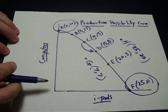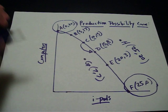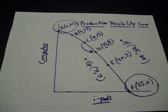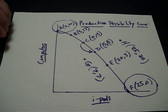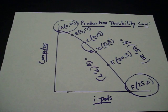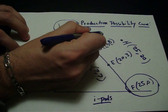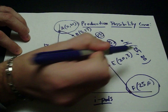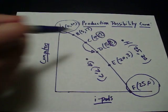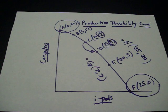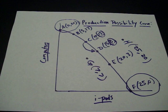So the opportunity cost, opportunity cost remember is what you give up, the next best decision. The opportunity cost of going from C to D would be that they lose out on the production of 5 computers. They were producing 13 computers, now they're only producing 8. So the opportunity cost is what we give up going from one point to another. So going from C to D the opportunity cost would be 5 computers.